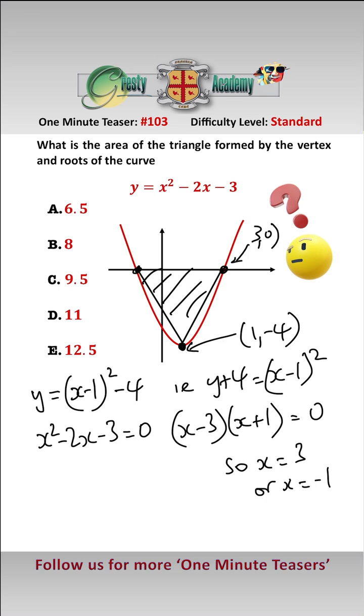So that point there is 3, 0 and this point here is minus 1, 0. So now to find the area of the triangle is fairly simple. We need the base which is a distance of 4, and we need the height, the perpendicular height which is also a distance of 4.